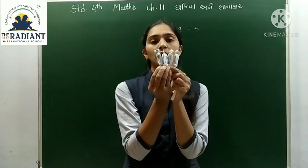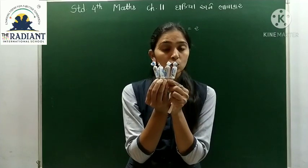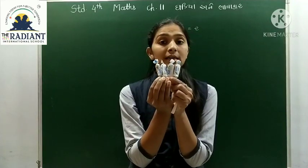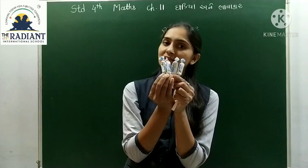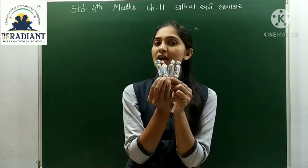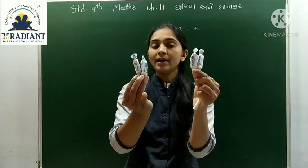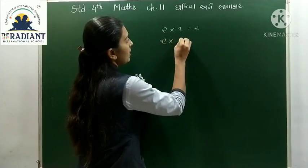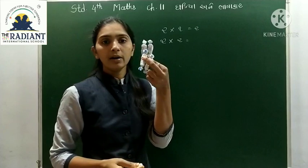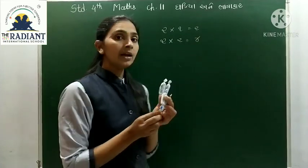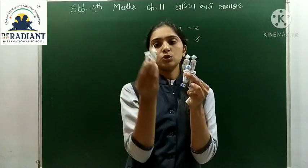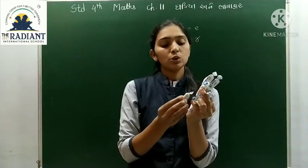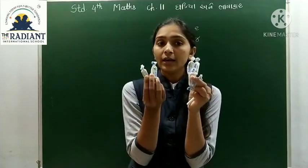હવે મારી પાસે બે ચોક્લેટ હતી અને બીજી બે ચોક્લેટ ઉમારી, તો કેટલી ચોક્લેટ થઈ? ચાર ચોક્લેટ. તો મેં બે ચોક્લેટ કેટલી વાર લીધી? બે વાર. 2 ગુણ્યા 2 - કેટલી ચોક્લેટ થઈ? ચાર. ફરીથી બે ચોક્લેટ ઉમેરી તો કેટલી ચોક્લેટ?